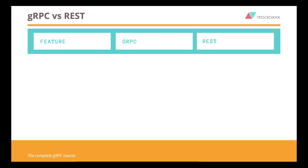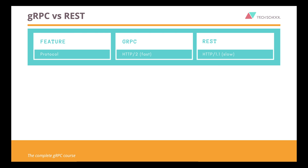Let's do a quick comparison of gRPC and REST to see their differences. First, gRPC uses HTTP/2, which is much faster than HTTP 1.1 used in REST.